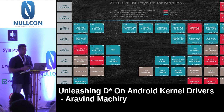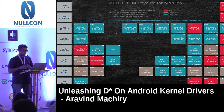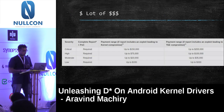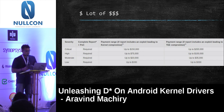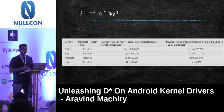Zerodium also pays a lot of money — up to $1,500k for different bugs in Android. Not only Zerodium — Google also pays a lot. The minimum amount is $300, and you can get up to $150k depending on the severity of the bug. If the bug is critical, you get $150k. So there is a lot of money involved.